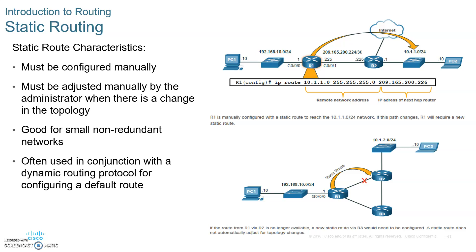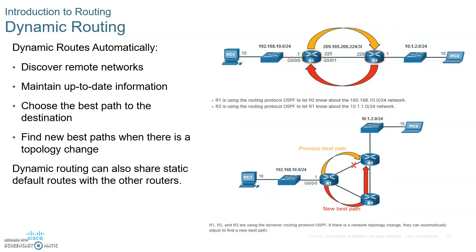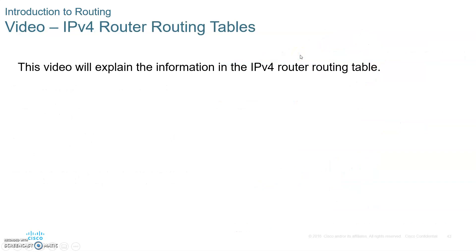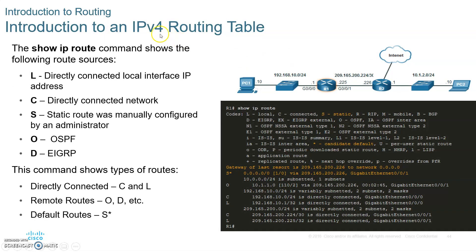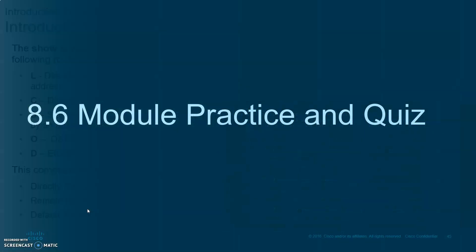Static routing means the administrator manually types the routes in. Dynamic routing is when routers talk to each other to build the routing table. In the routing table, the letter C means directly connected; O means learned dynamically via OSPF; D means learned via EIGRP; R means learned via RIP; and the default route typically shows the letter S with a star (static). That's it for chapter 8 — please write down everything I asked and submit it as homework. I'll see you in the next chapter.